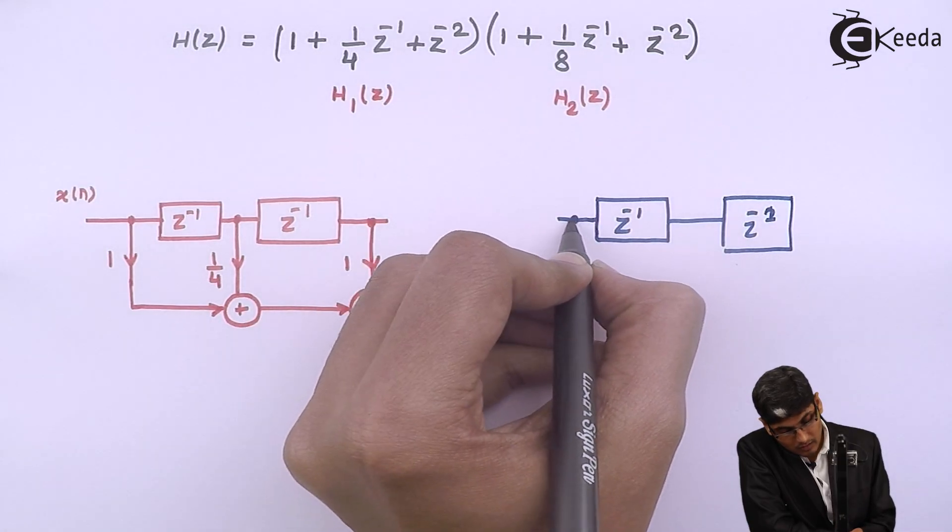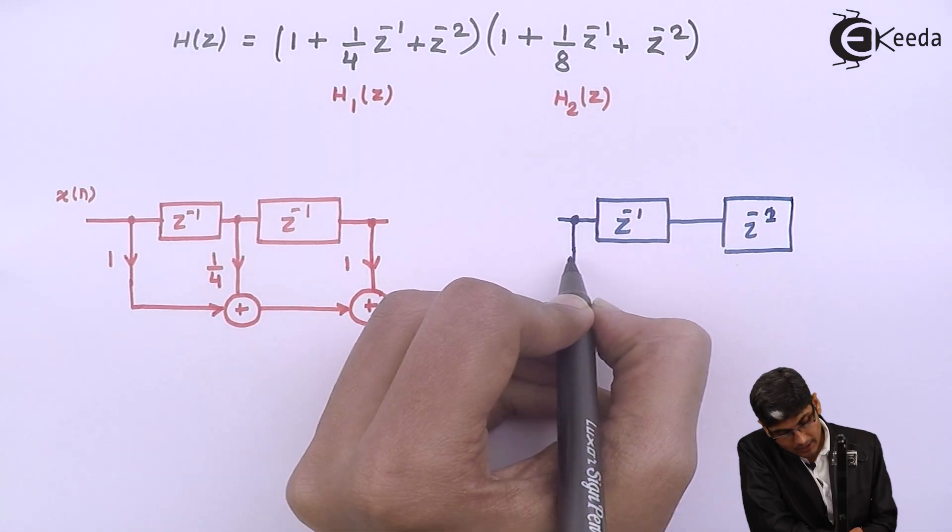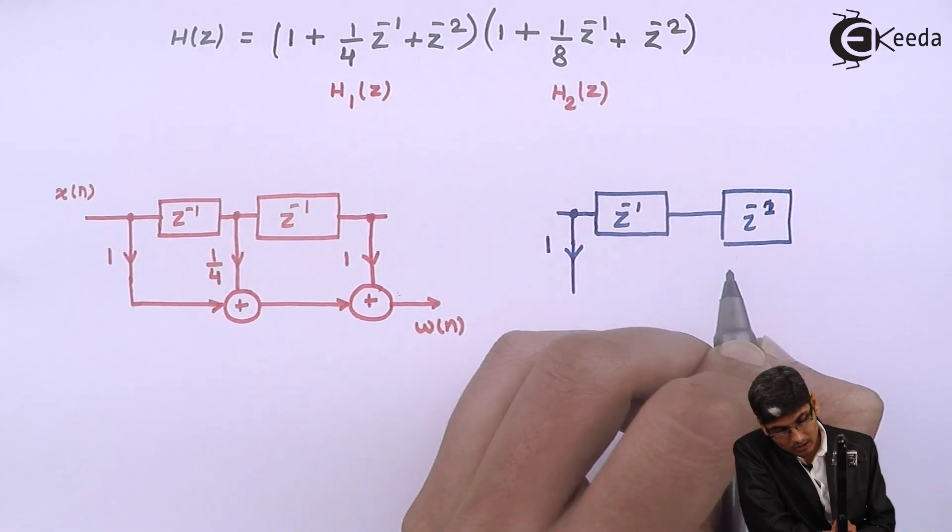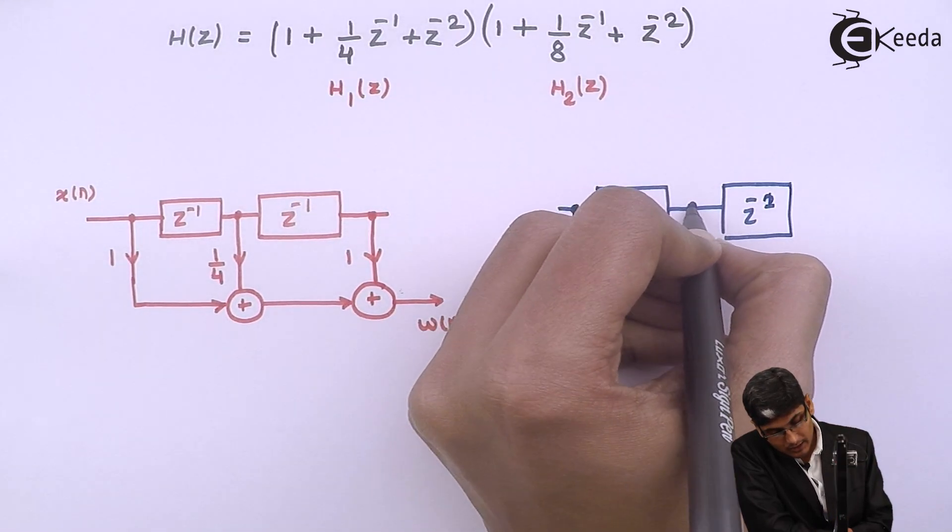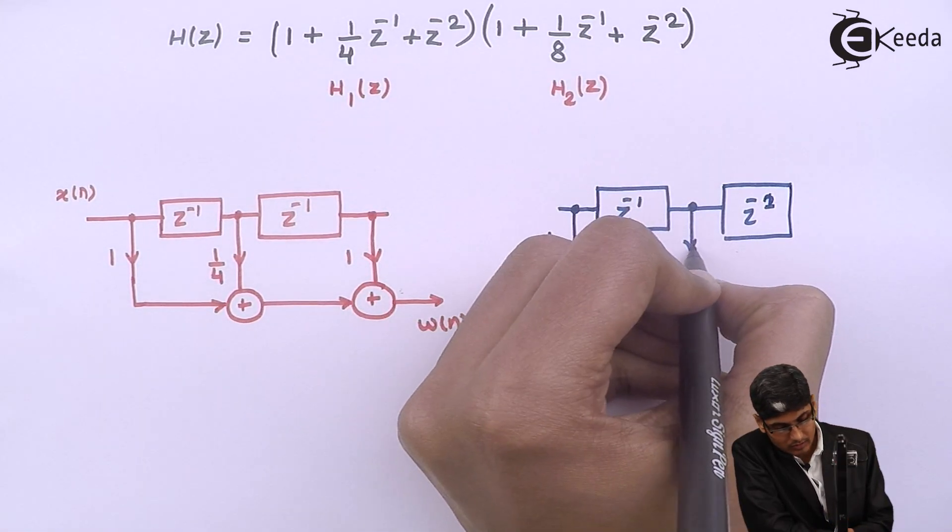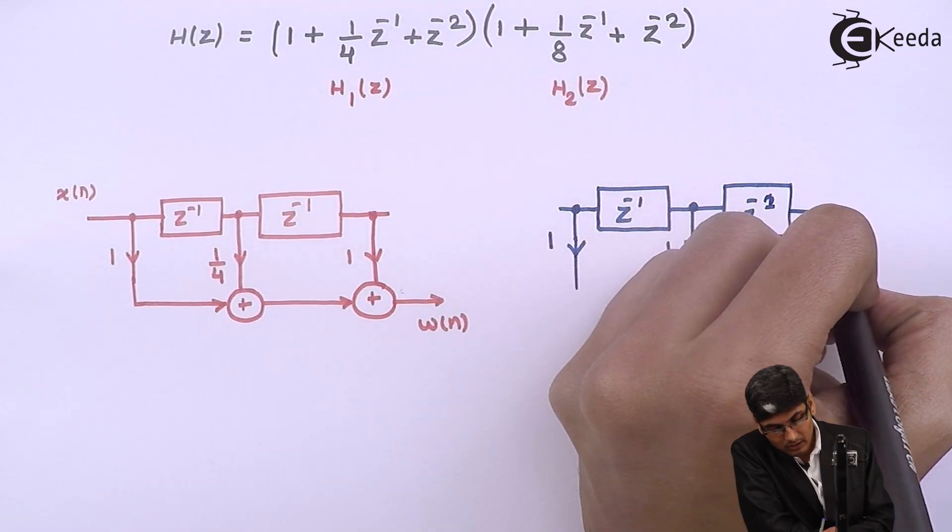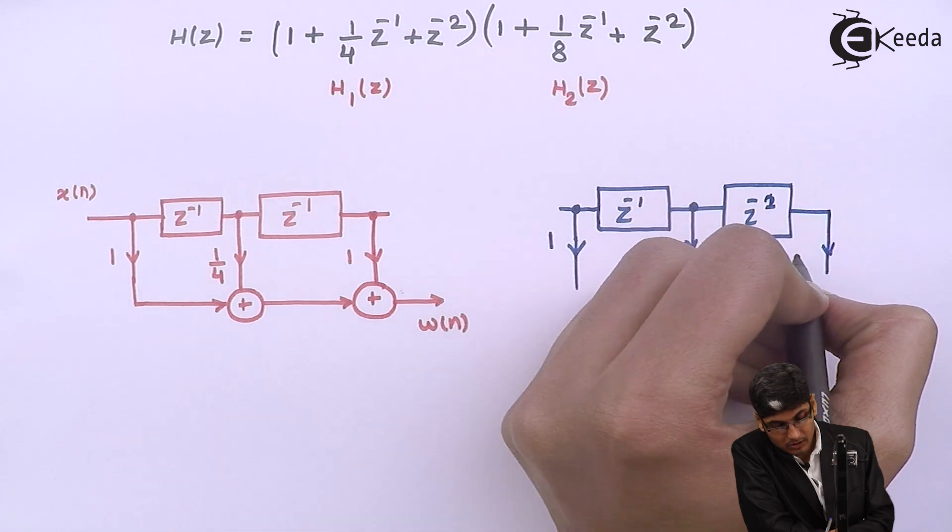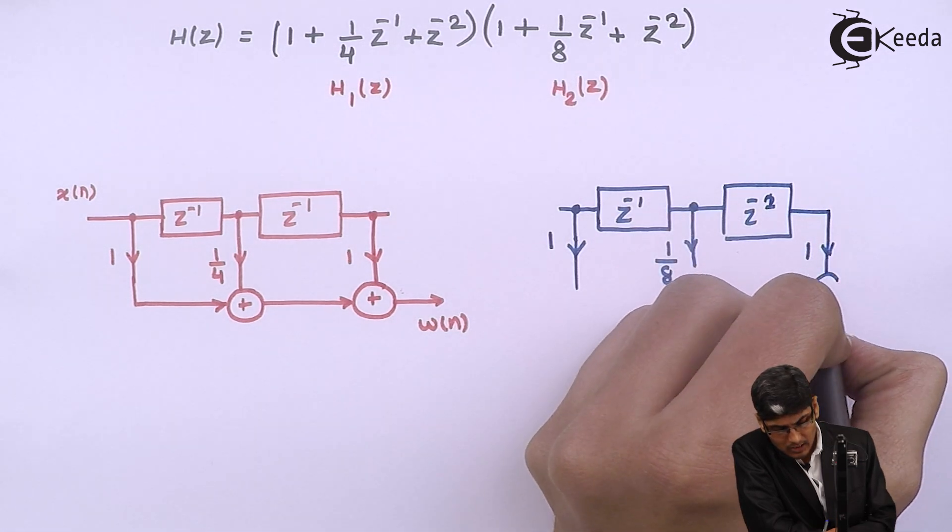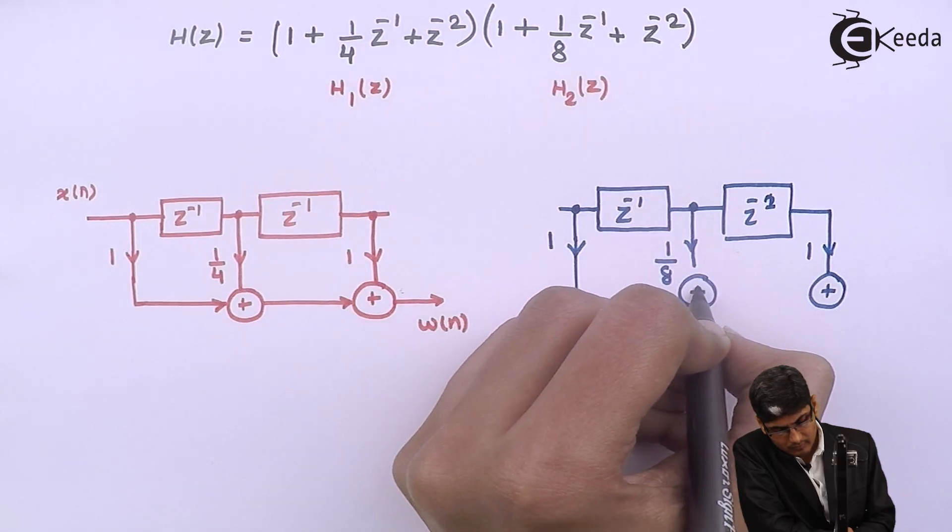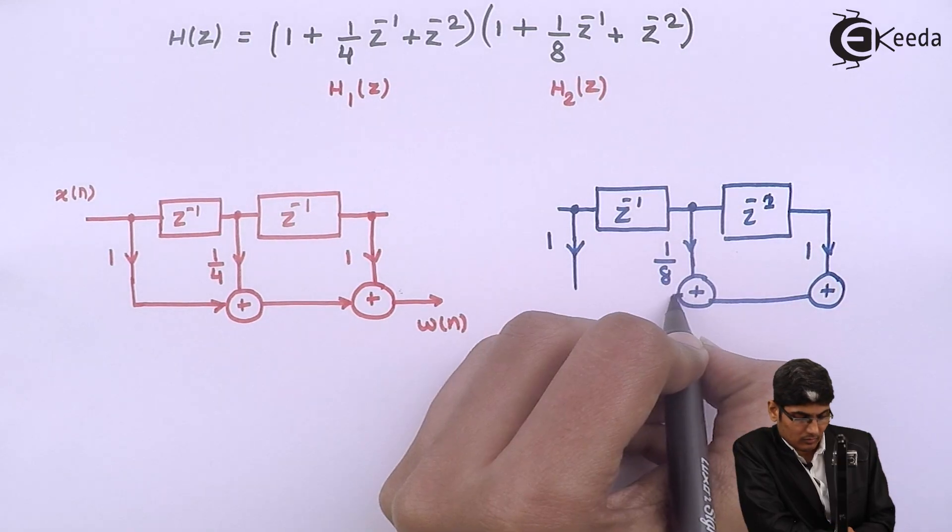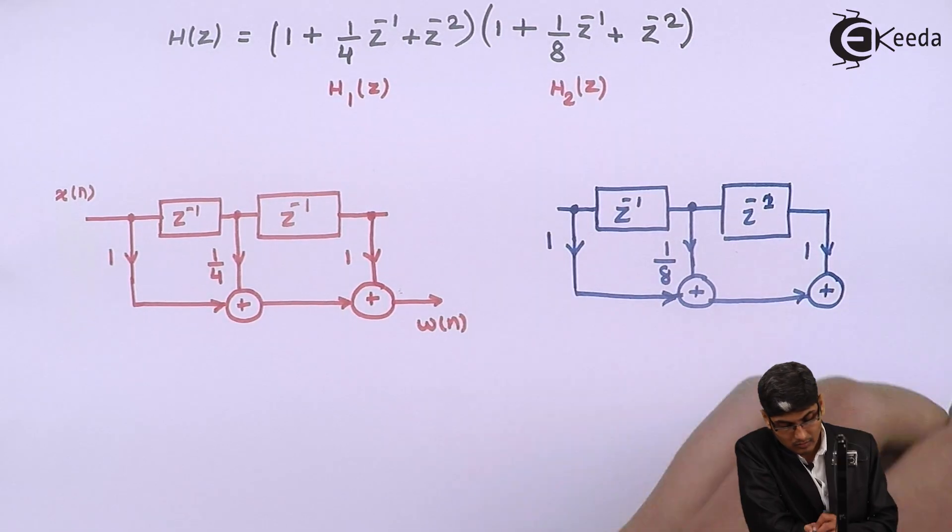I will have one multiplier coming from here which is 1, then second multiplier from here which is 1 by 8, and the third multiplier will be coming from here which is 1. Let us add them all.